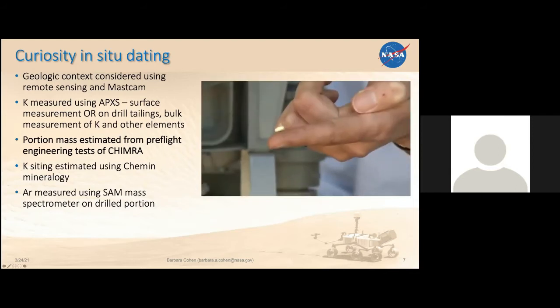All of those are things that we do by second nature as laboratory scientists, but it's a lot more intense doing that with a rover on the surface of Mars. Curiosity did a lot of testing with that system to understand how much material is being moved to each instrument. That portioning is a really crucial measurement in the calculation of the ages, and I don't think it gets enough attention as a potential source of uncertainty.